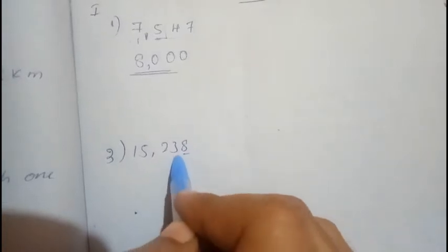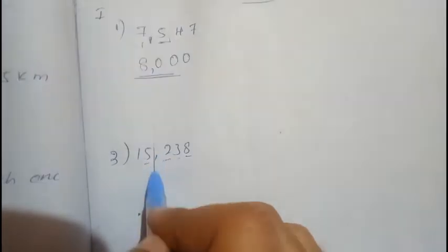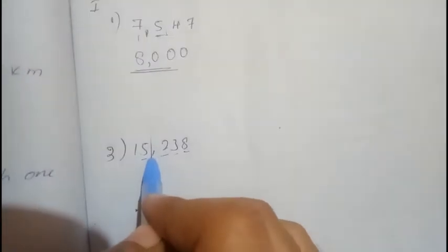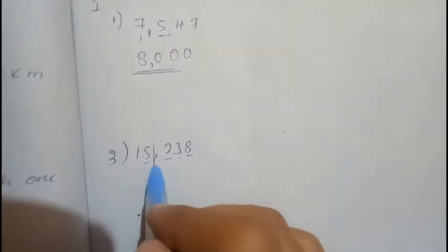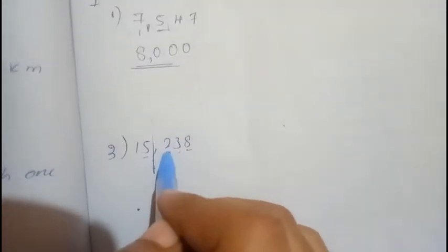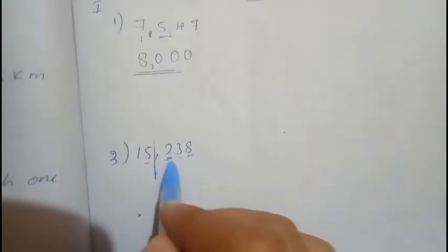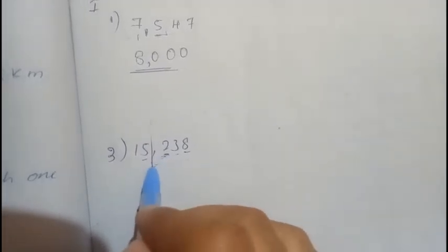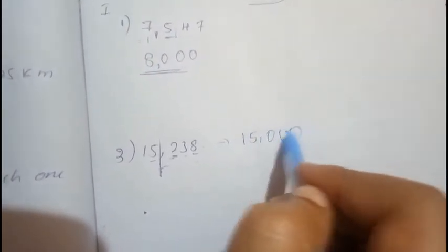For the third question, identify the units, tens, hundreds, and thousands places and mark a line in your mind — don't draw it in your notebook, this is just for explanation. Check the hundreds digit: the number 2 is less than five. So replace all digits after the thousands place with zeros. Your answer is 15000.